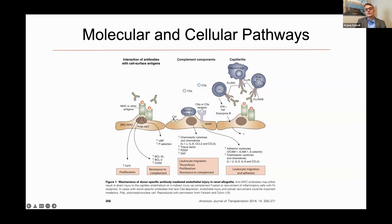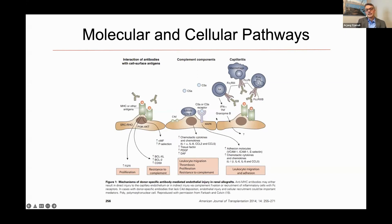The indirect pathway will require either the complement, hence the deposition of C4d as a footprint of rejection, or it will be complement independent — a process in which you have peritubular capillaritis or glomerulitis through recruitment of PMNs, monocyte macrophages, or NK cells. These are all processes that require the presence of antibodies in terms of their interactions with the antigen on the surface of endothelial cells.